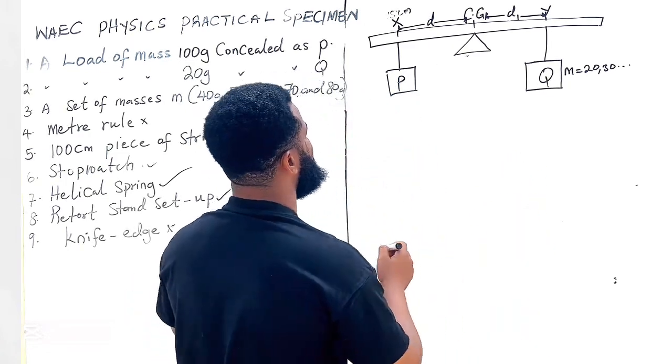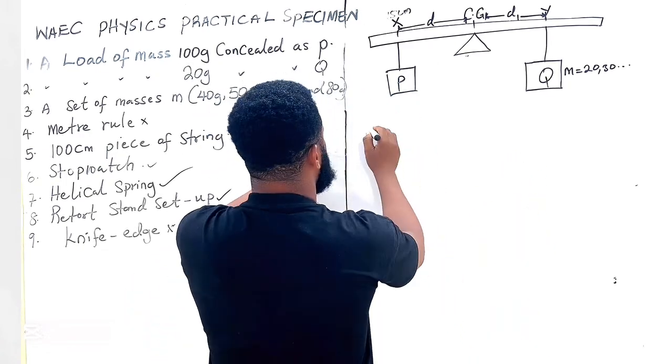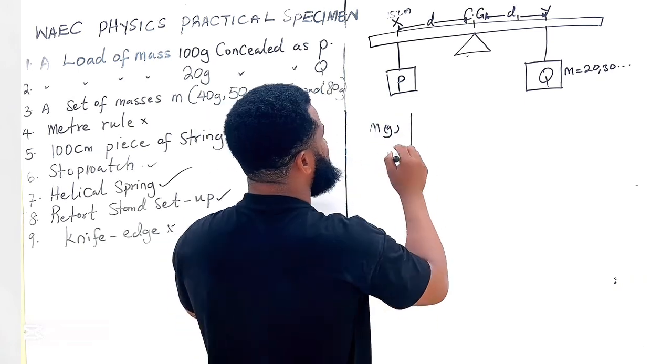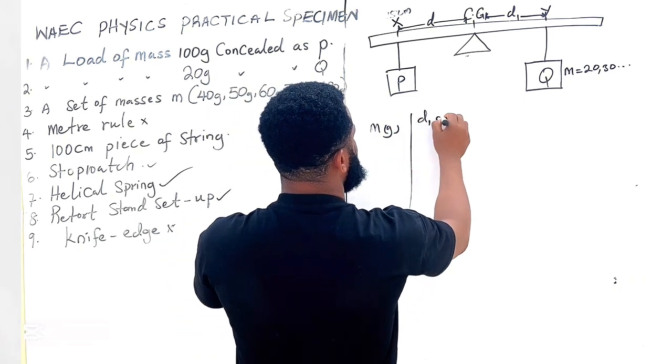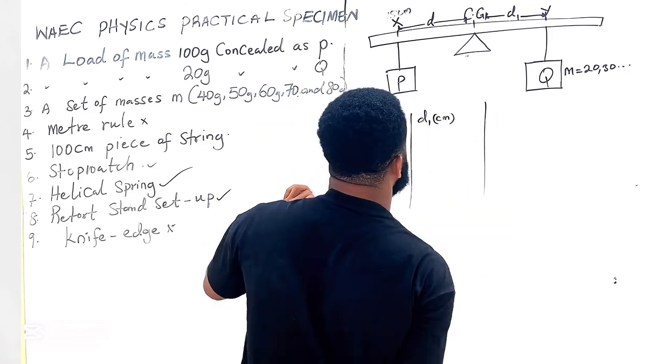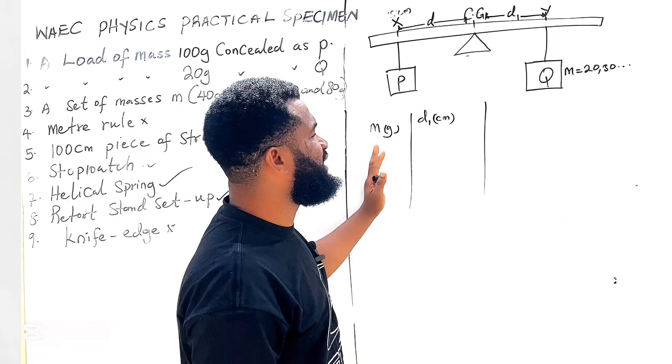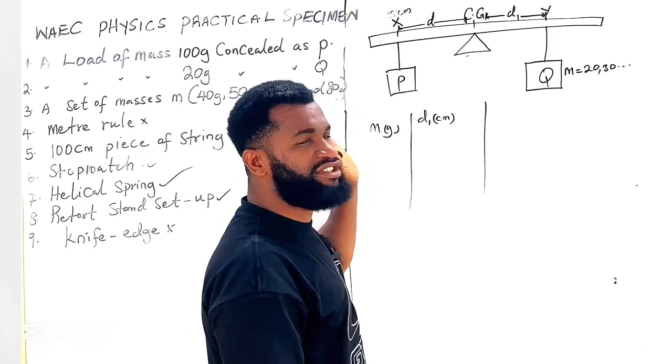Maybe if you put 20, you keep on moving it until you maintain equilibrium, then you label d1. So this is how your table is going to look like. Your table is going to be mass in grams and you are going to label d1 in cm.